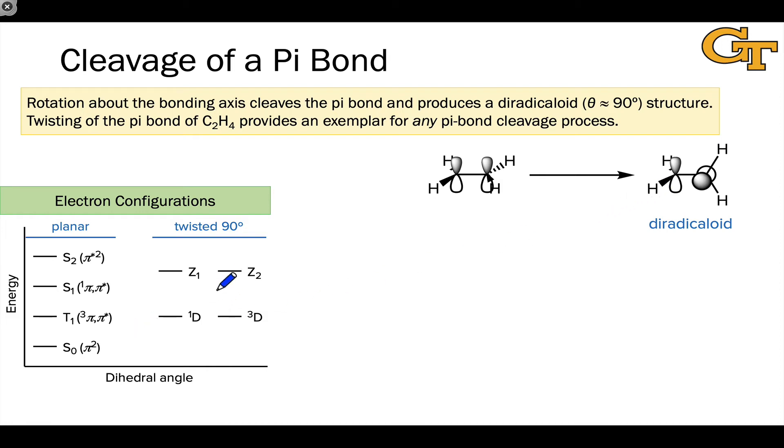In the twisted 90 degree structure we now have four distinct possibilities. We have the singlet diradical where the electrons have anti-parallel spins. We have the triplet diradical where the electrons have parallel spins. We have a z1 state in which both electrons are now paired in one of the p orbitals, and the z2 state with both electrons paired in the other p orbital. For ethylene, z1 and z2 are degenerate, as are the singlet and triplet diradicals. The z states will not be degenerate for a polar pi bond.